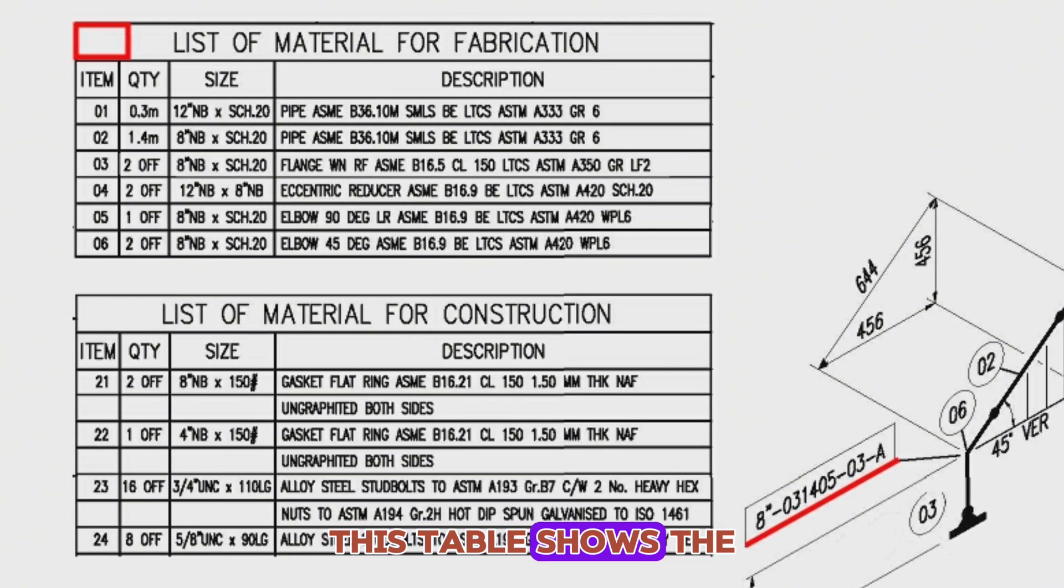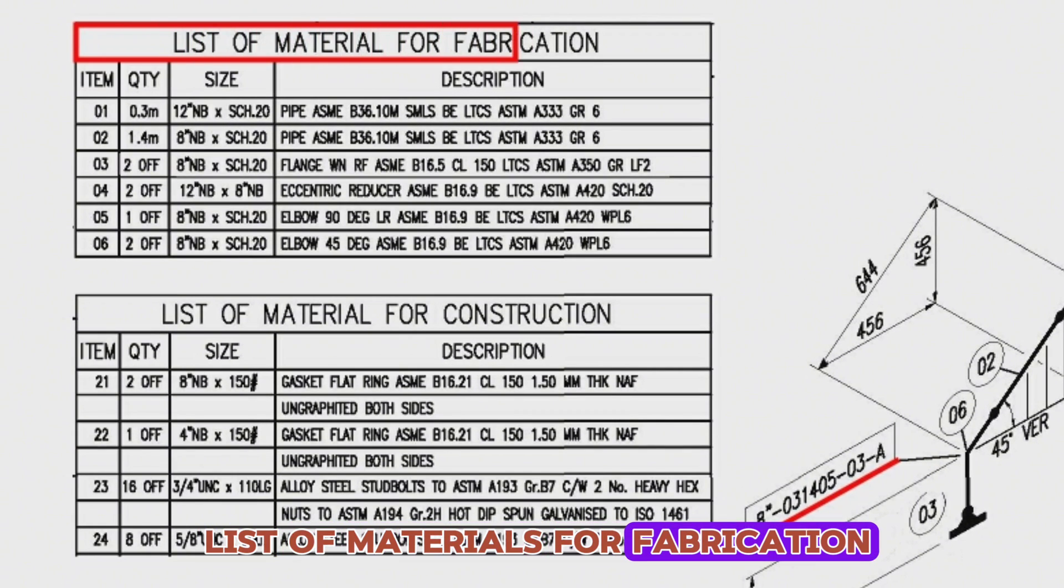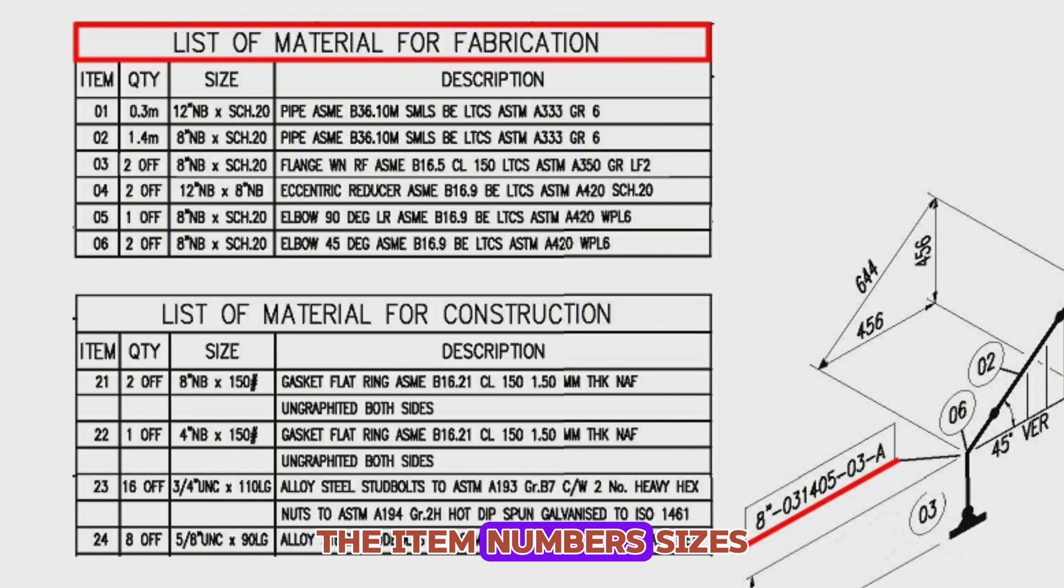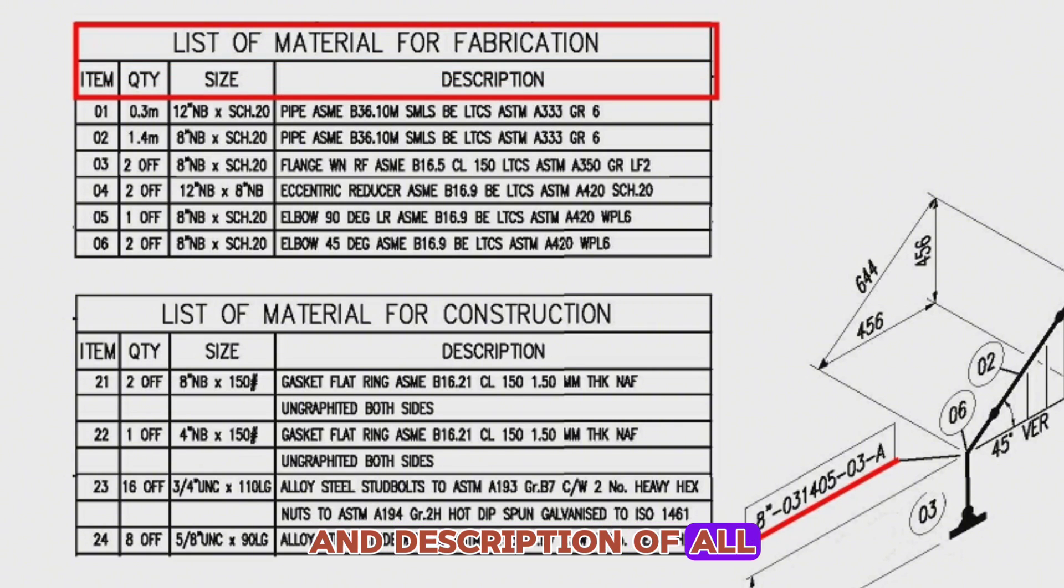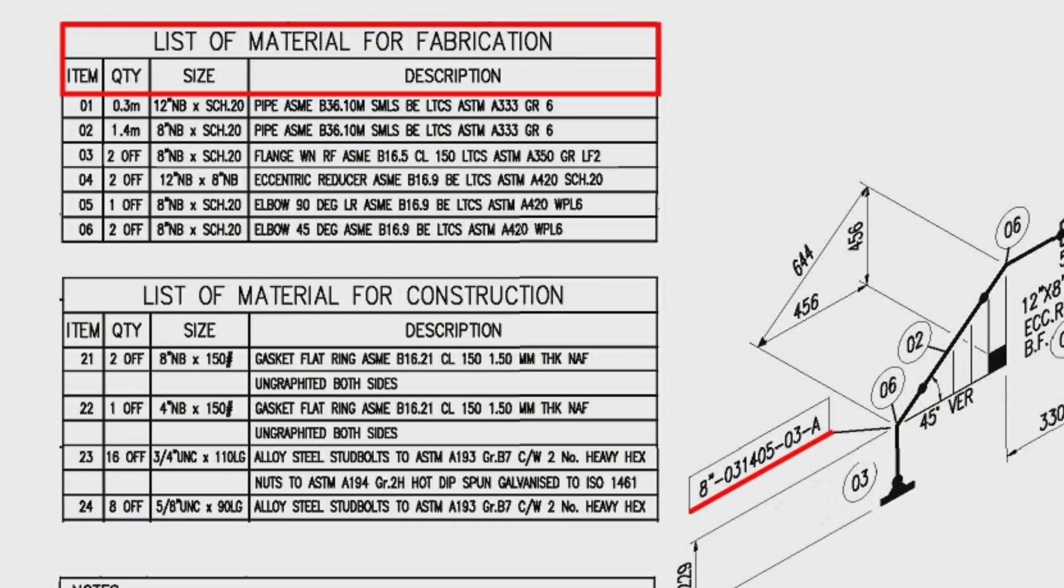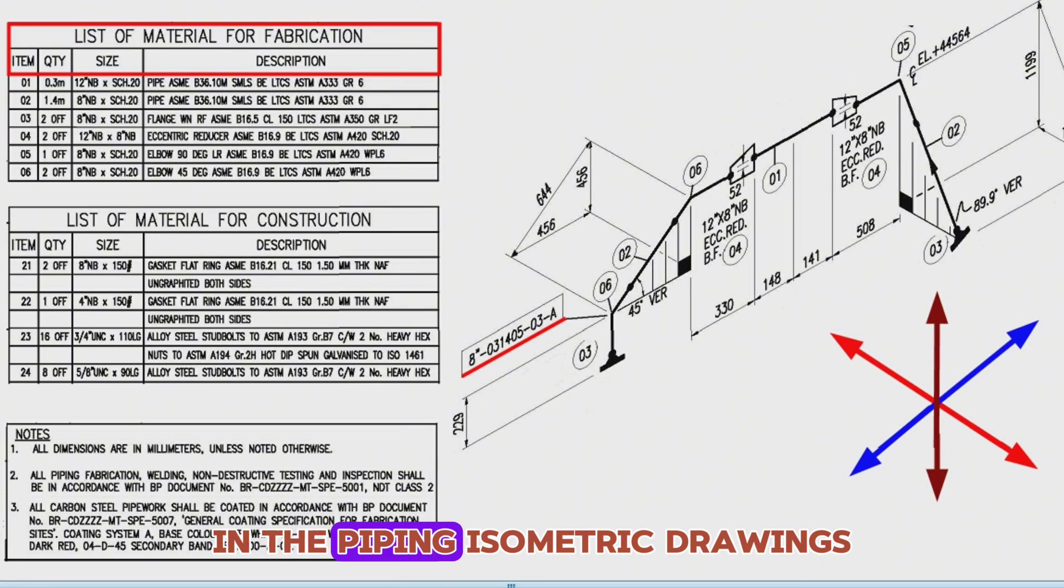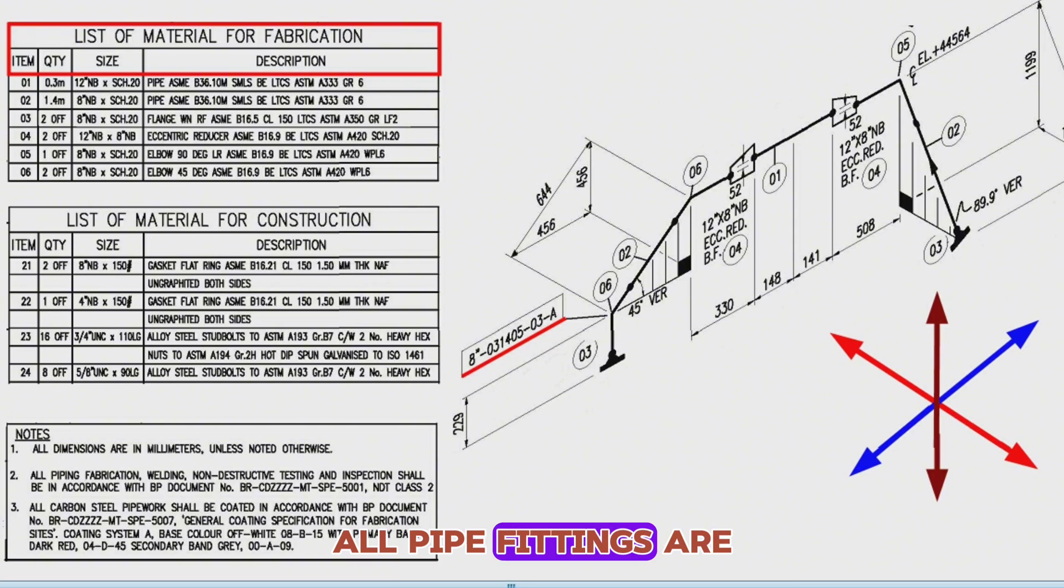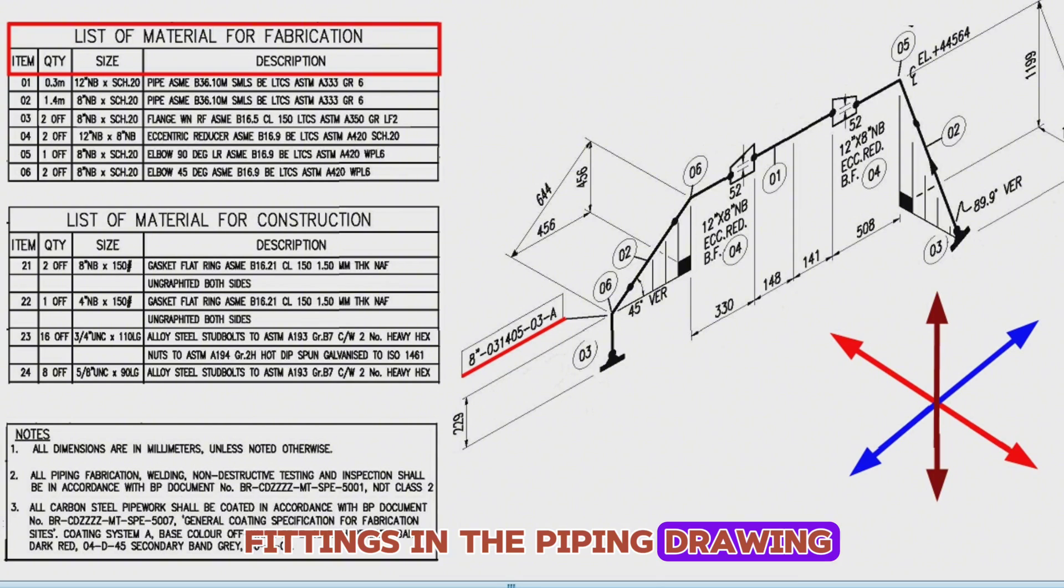Let's first look at the pipe fitting materials used for the fabrication of this pipeline. This table shows the list of materials for fabrication. The item numbers, sizes, and description of all pipe fittings in the pipe drawing are shown in this table. In the piping isometric drawings, all pipe fittings are shown by numbers. Let's learn the pipe fittings in the piping drawing step by step.